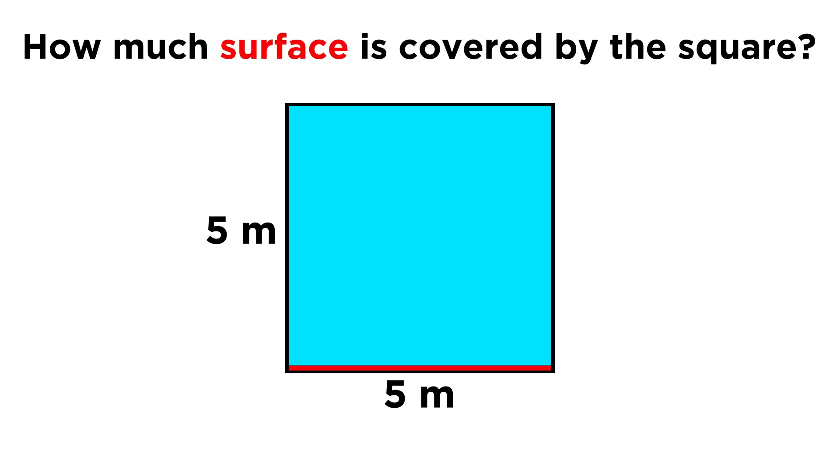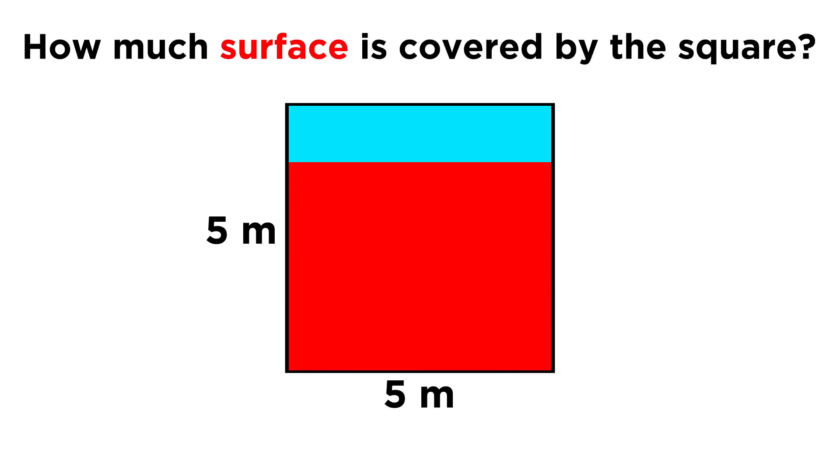we can take this line segment that represents one side of the square, and realize that to span the shape, we are extending this line segment across the shape, so it's a five meter length that is being pushed across the five meter length of the adjacent side.